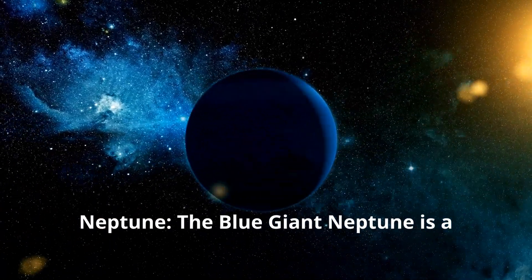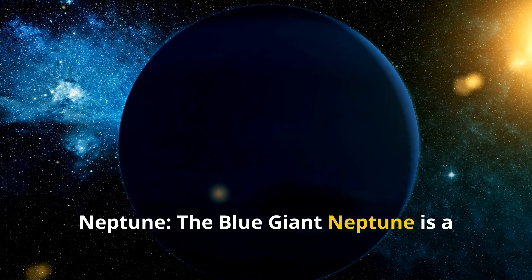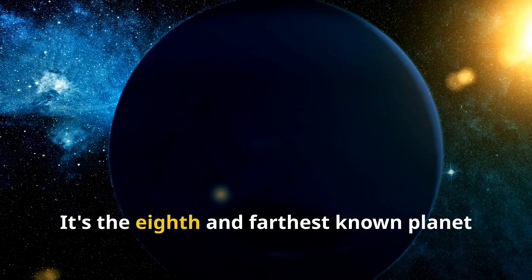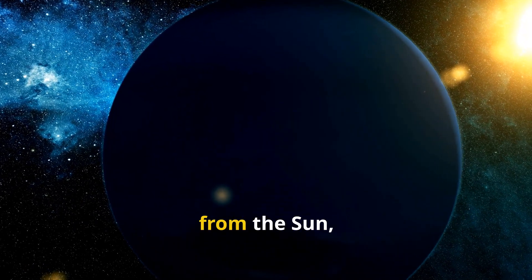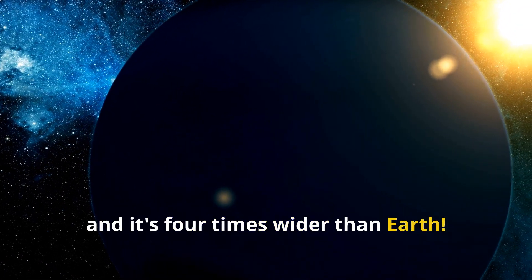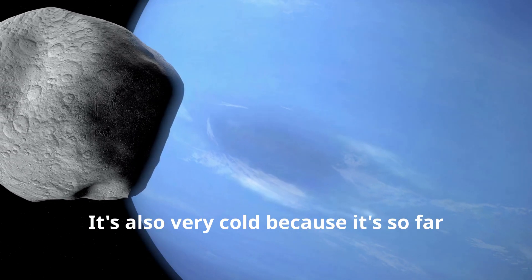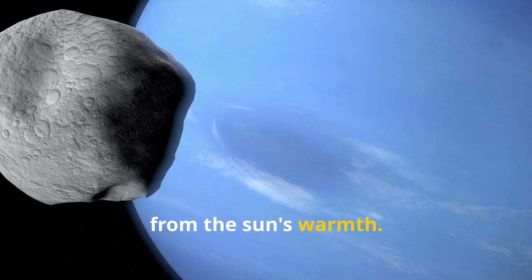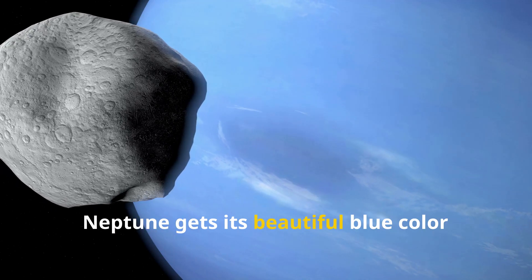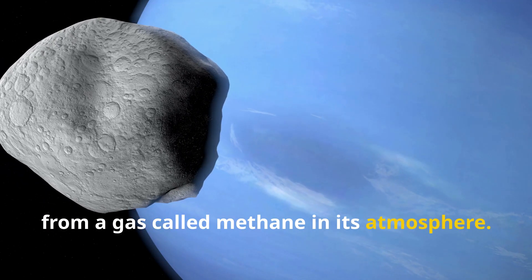Neptune, the blue giant. Neptune is a fascinating planet. It's the eighth and farthest known planet from the Sun, and it's four times wider than Earth. That's huge. It's also very cold because it's so far from the Sun's warmth. Neptune gets its beautiful blue color from a gas called methane in its atmosphere.